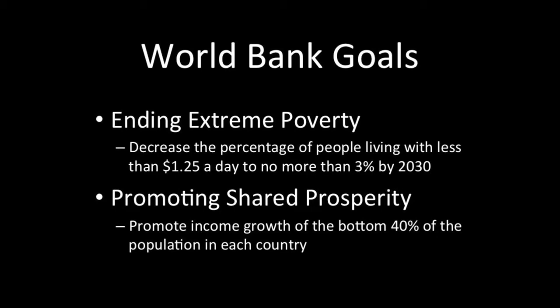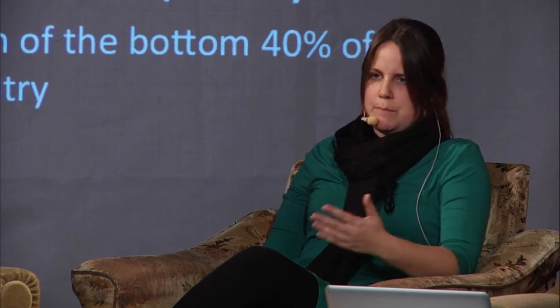It's quite an ambitious goal. But not only that — also promoting shared prosperity, which means promoting income growth of the bottom 40% of the population in each country. There are a lot of income differences within countries. In a country like India or China, we have very big regional differences in poverty levels. So you need to look at the location of where poverty is.